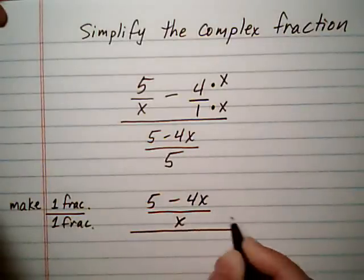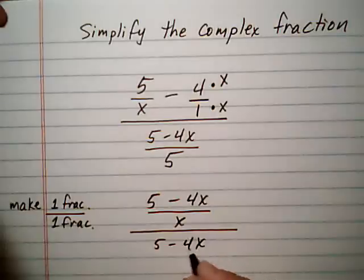And then we just keep the bottom one, 5 minus 4x over 5.